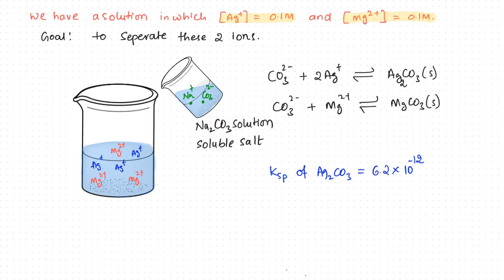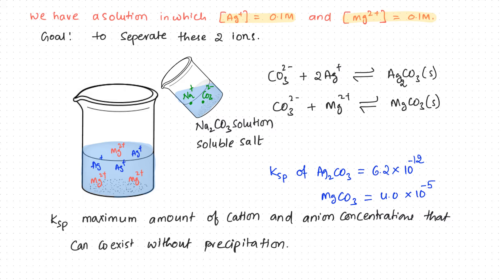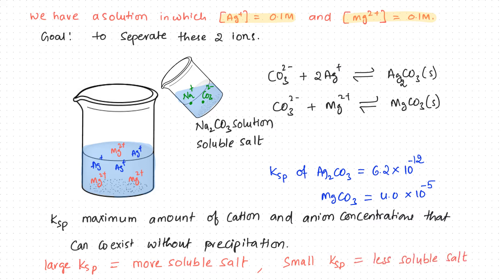The Ksp value of silver carbonate is 6.2 times 10 to the negative 12, and magnesium carbonate is 4.0 times 10 to the negative 5. Remember that the Ksp value tells us the maximum amount of cation and anion concentrations that can coexist without precipitation. If this value is large, that means more cations and anions can coexist in solution without precipitating — in other words, it is a more soluble salt. Similarly, if the Ksp value is small, that means a very small amount can coexist without precipitating — it is a less soluble salt. Between silver carbonate and magnesium carbonate, silver carbonate seems to be the less soluble salt.